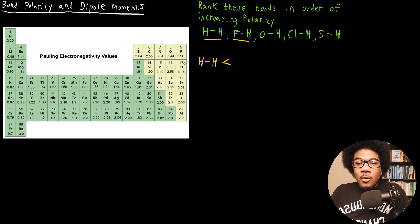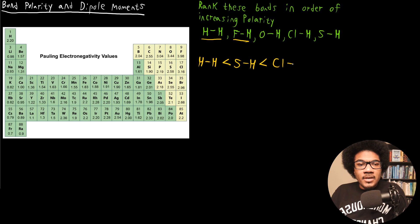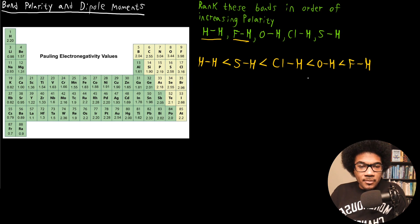Following the trend, as we go up the periodic table, electronegativity increases. So sulfur and chlorine — ClH and SH — should be the next highest in polarity, with SH being the least polar since electronegativity also increases going to the right of the periodic table. So next should be SH, and greater than that in polarity should be ClH. Then going to the first row, we have OH and FH: greater than ClH would be OH, and obviously the most polar would be the hydrogen-fluorine bond.